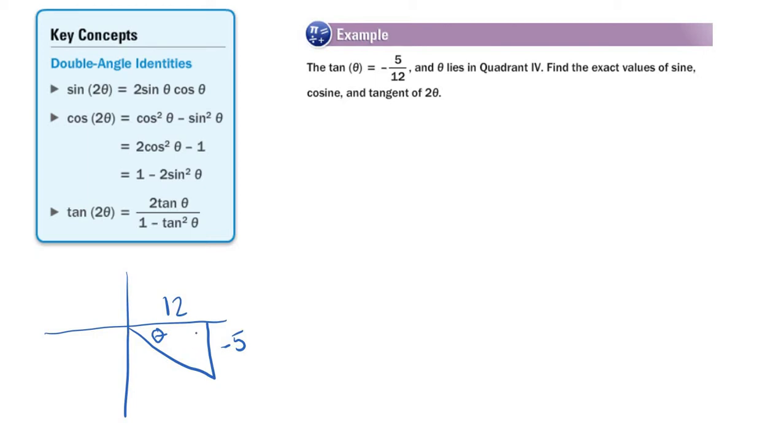And now we apply Pythagorean theorem. So 12 squared plus 25 squared, that's 169, square root, and we get 13 there. So there's my right triangle. Once we have that, we're in business.